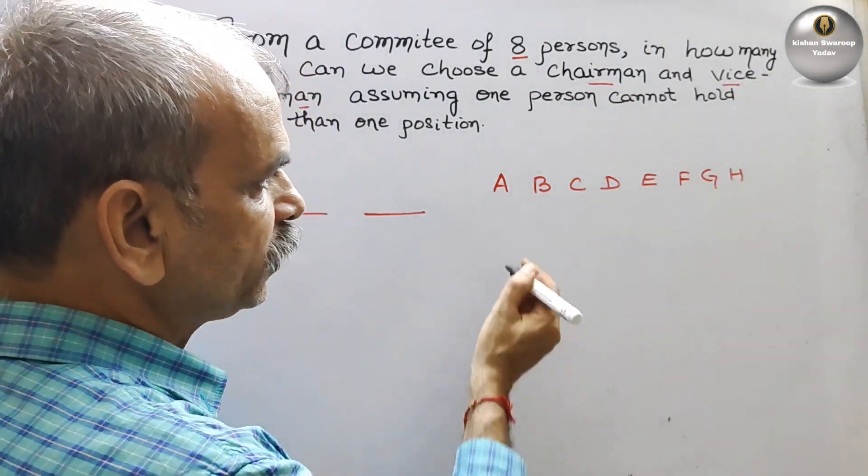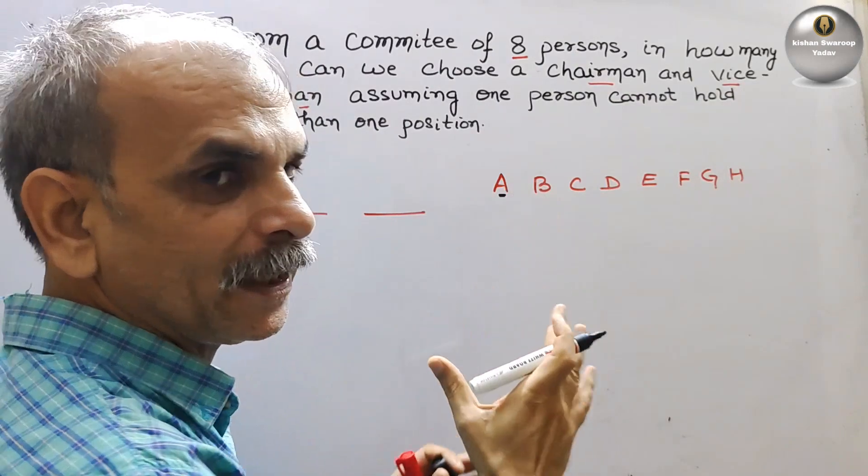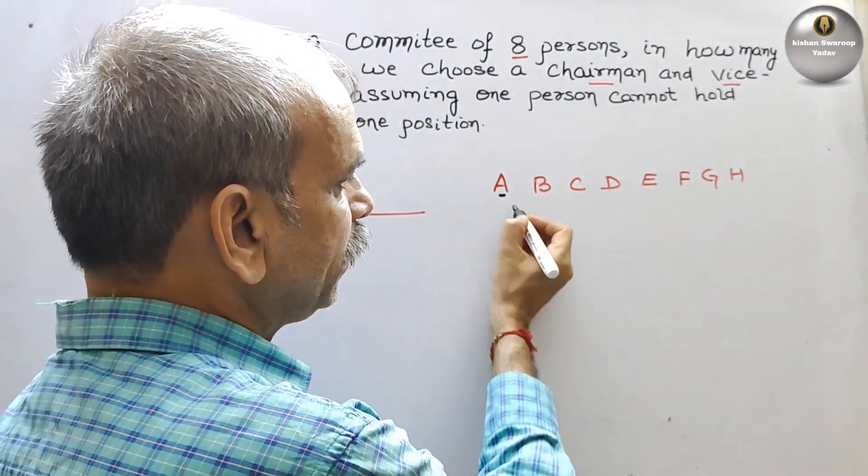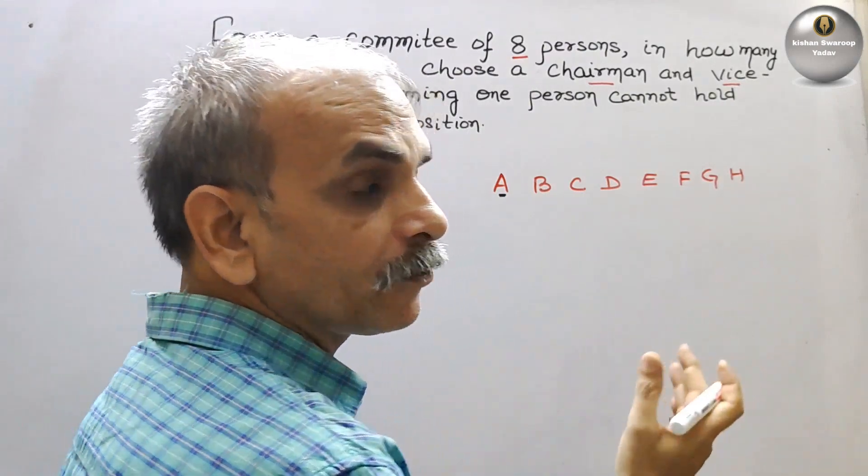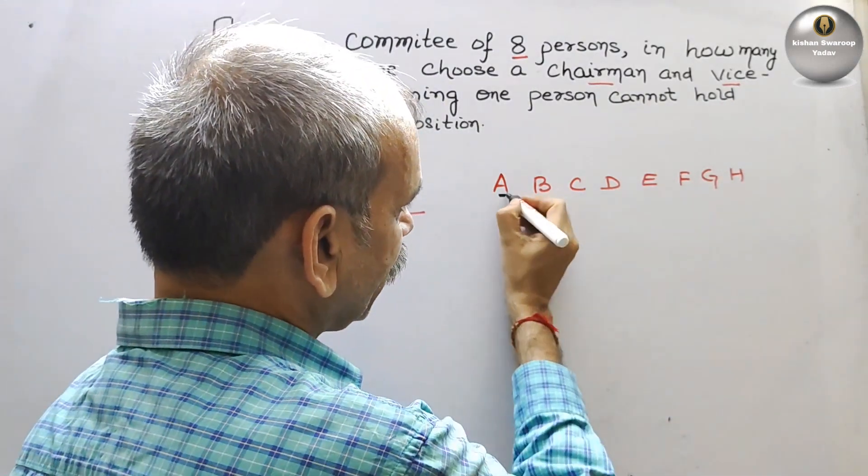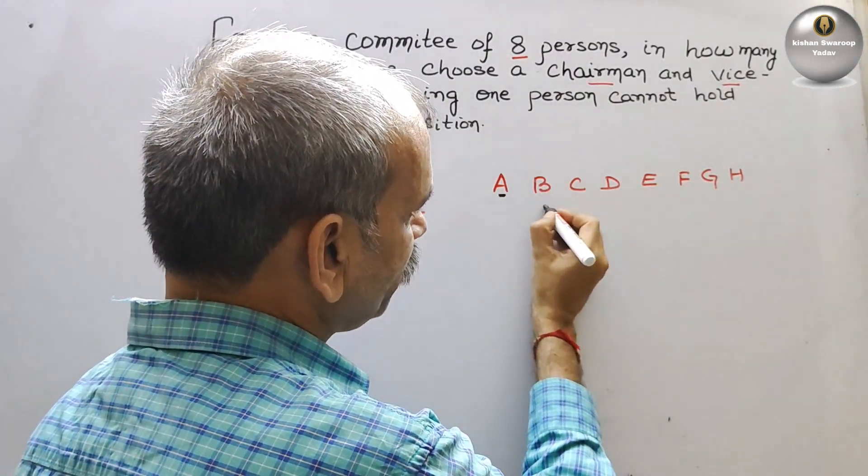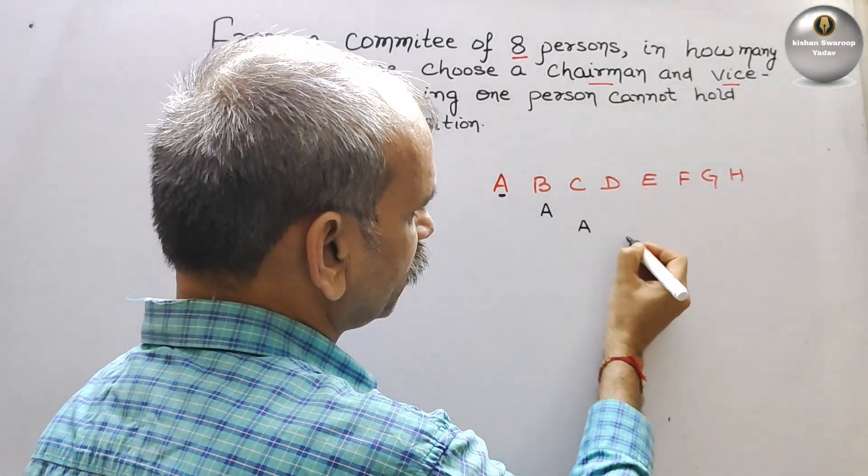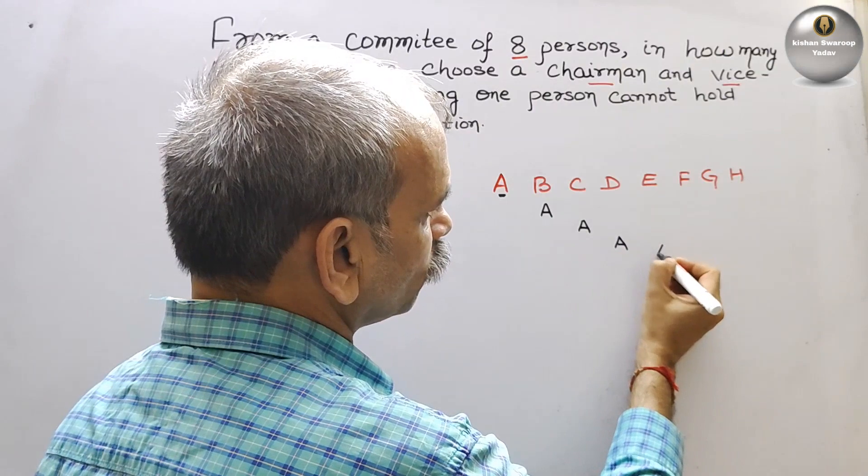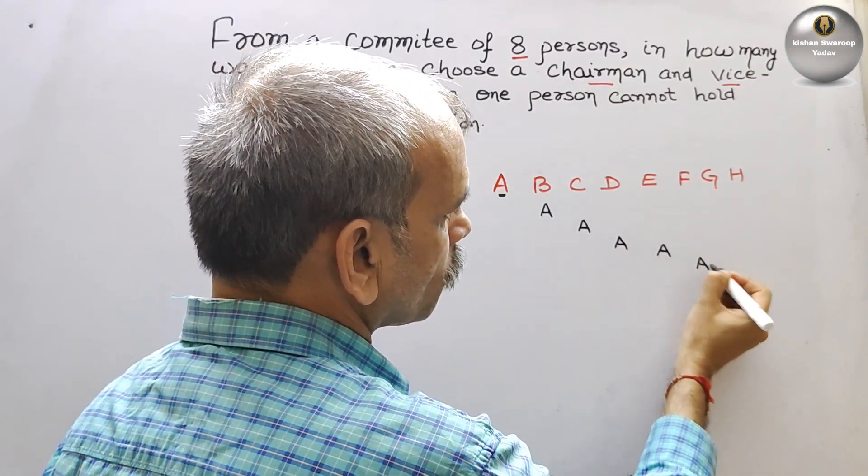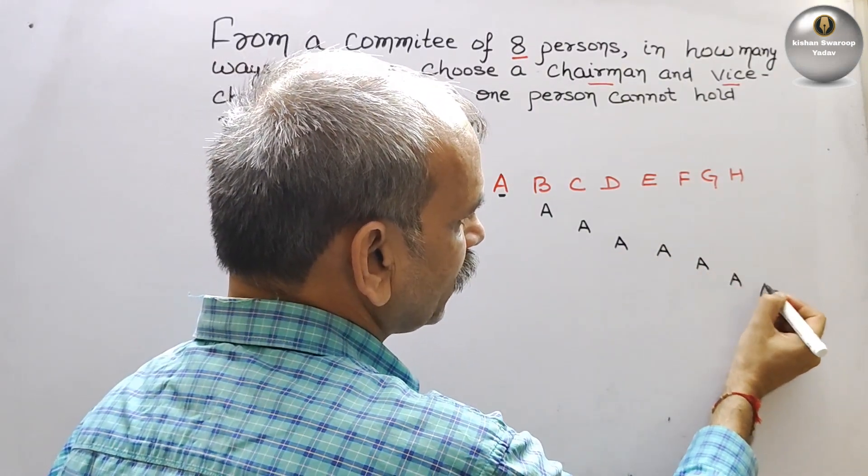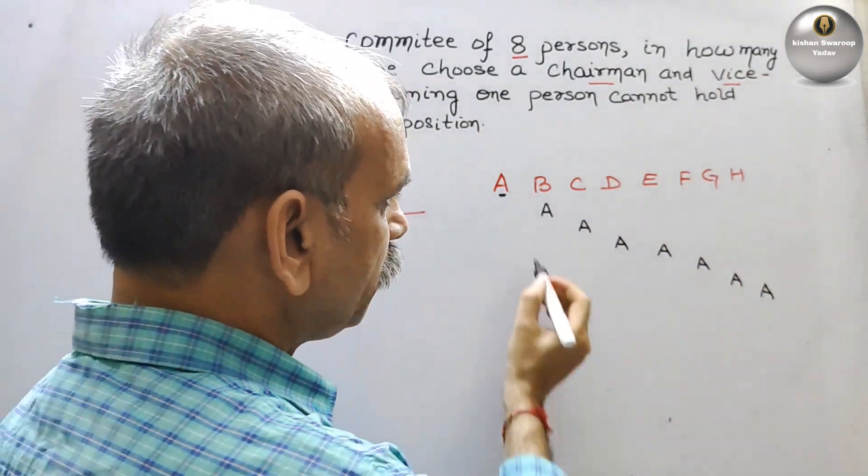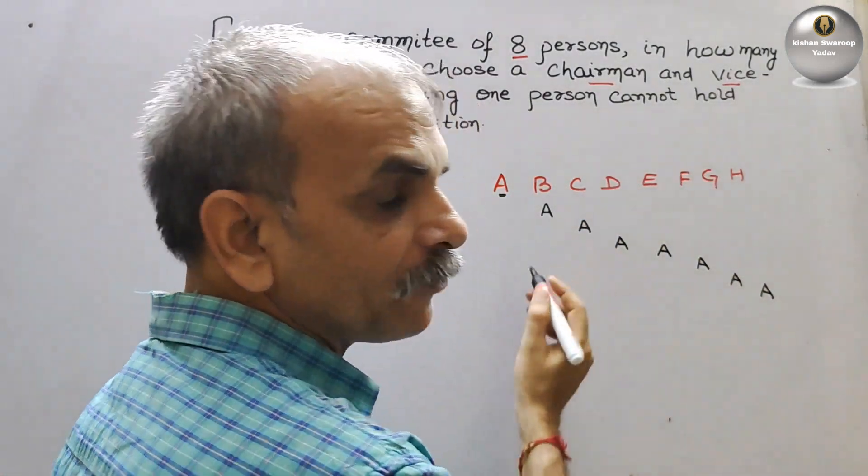So now if we see this A, suppose we have taken A. This A can be arranged in eight ways. So he can arrange here also. This A can be arranged in this position also. This can be arranged in this position. Likewise, it will go out. And at the last position also.